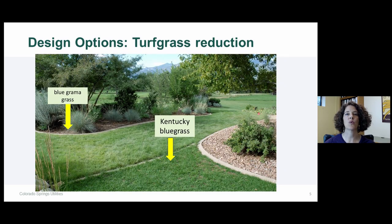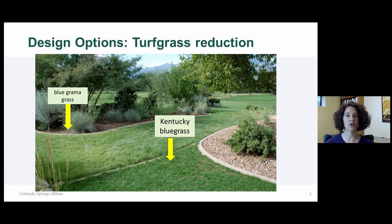Another option is what we call a turf grass reduction. A turf grass reduction is where you have a large area covered by traditional turf grass that you'd like to reduce. You keep a small area of your traditional lawn and then install blue grama grass or buffalo grass in the areas where you removed the grass.